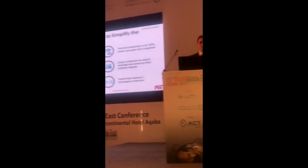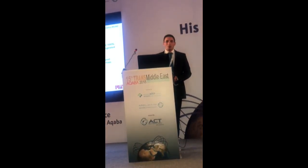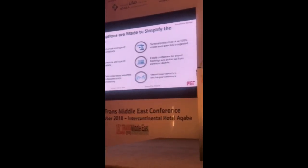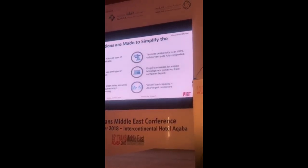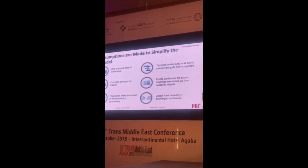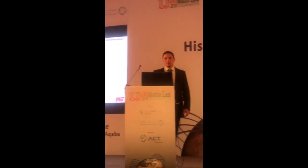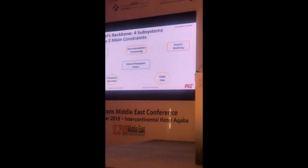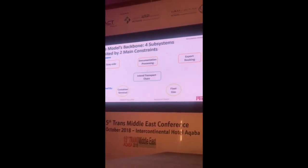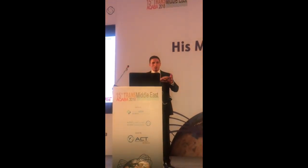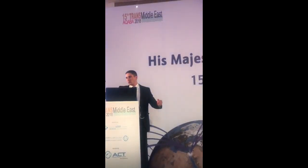Before building the model we made simplifying assumptions: only one size and type of container, one size and type of trailer, and terminal productivity is always at 100% unless the yard gets fully congested. The model has six main elements — four subsystems constrained by two main constraints. The subsystems are the quayside, documentation processing, export booking, and the main inland transportation chain from port to destination and back; the constraints are terminal yard capacity and fleet size.